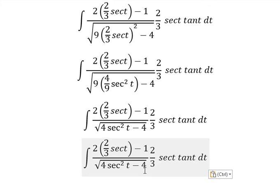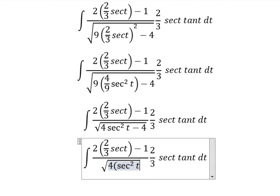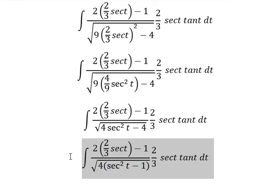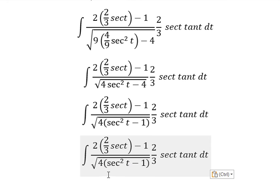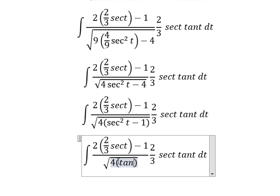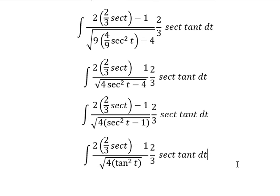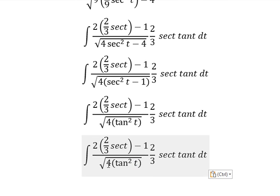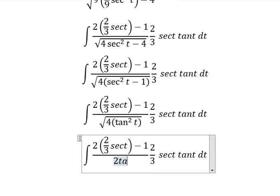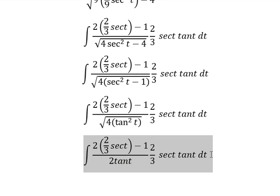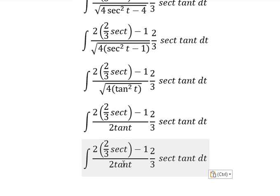Number 4, we can do factorization. Secant of t square minus 1, we change to tan t square. The square root of 4 tan t square, we have 2 tan t. And then we simplify number 2 tan t on numerator and denominator.